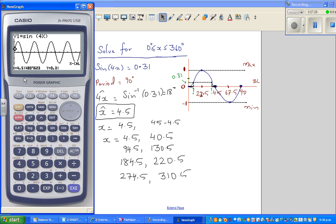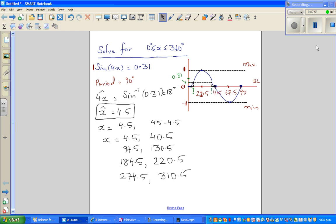And the first answer is 4.5. The next answer is 40.48, which is 40.5, that's fine. The next is 94.5. The next answer is 130.5, I've rounded it. This is 184.5, this is 220.5, this is 274.5, and the last answer is 310.5. See you in the next video.